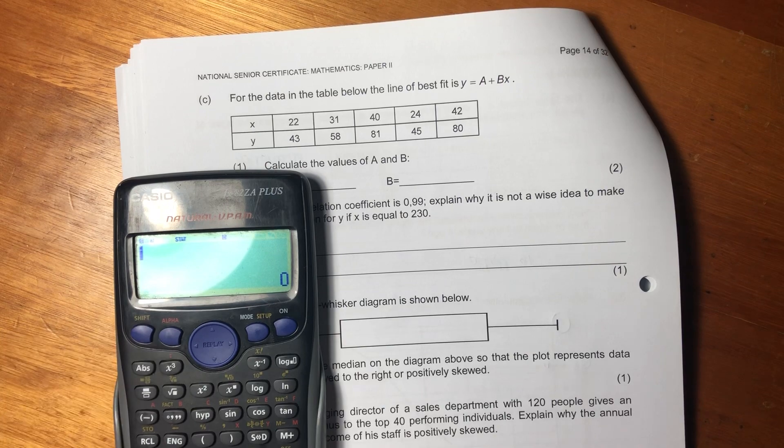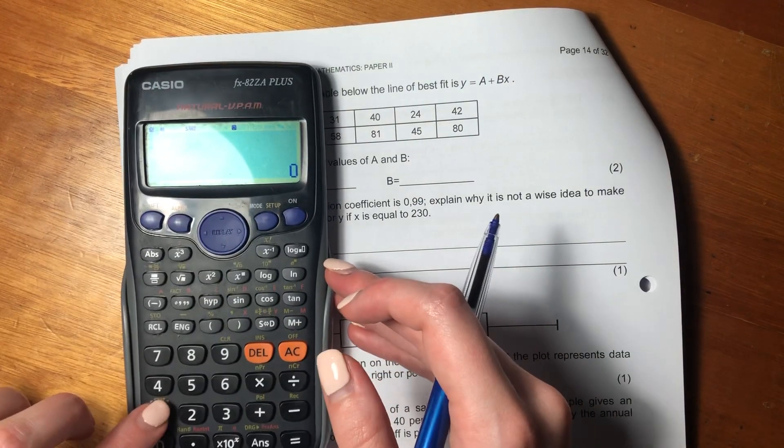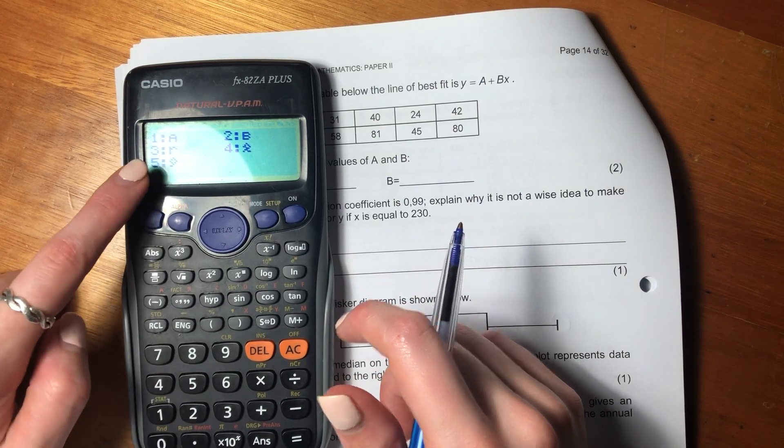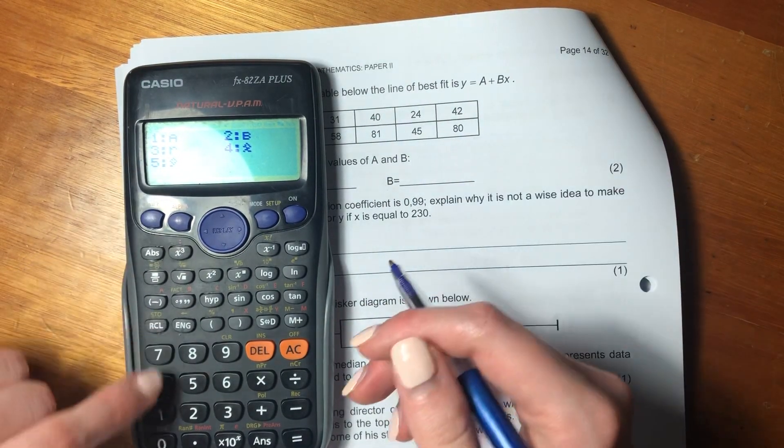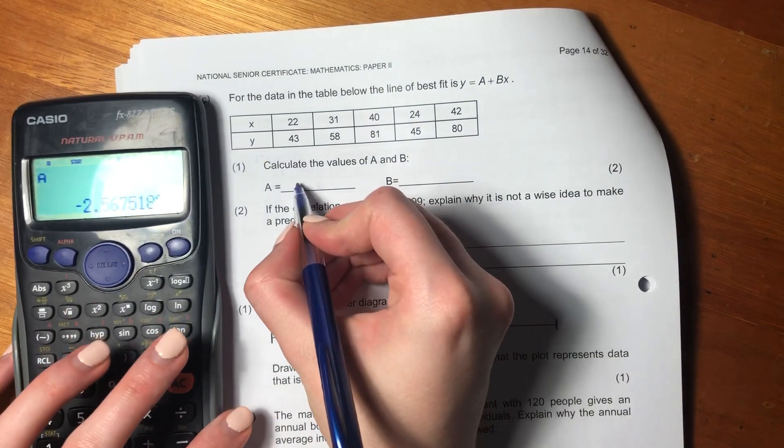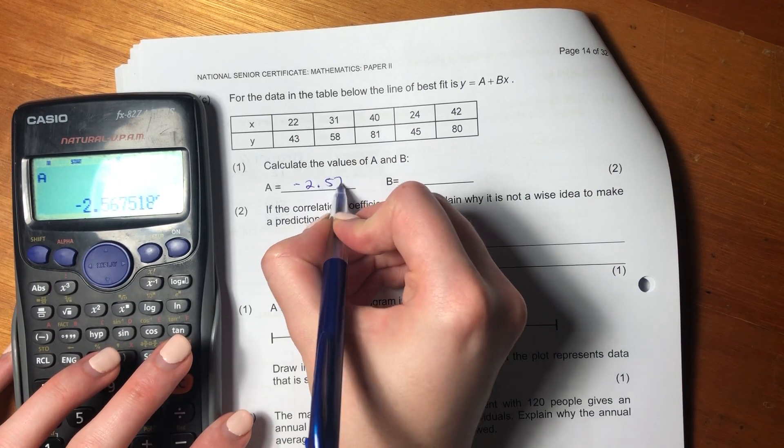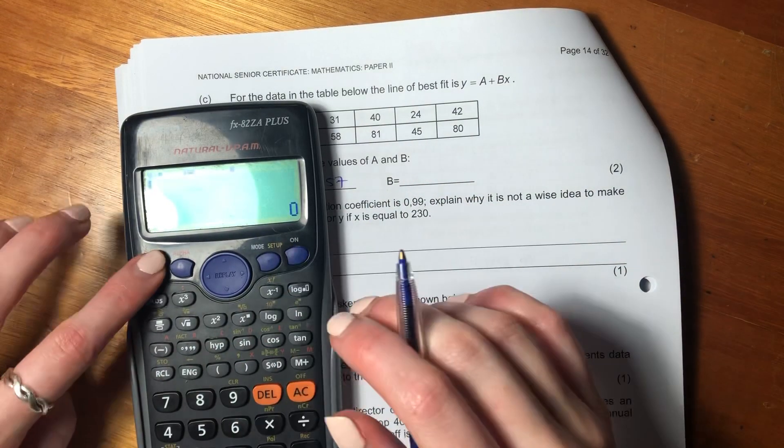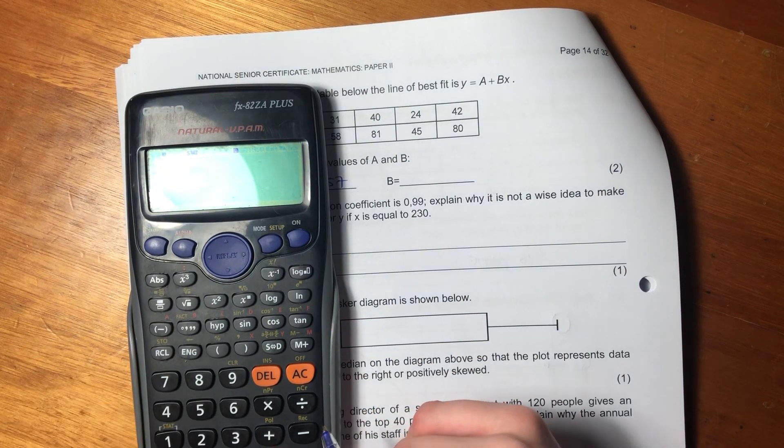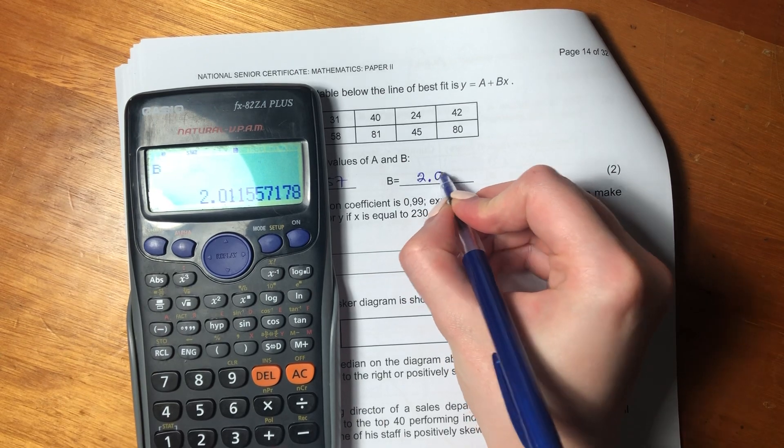Okay, you go shift stat. Then we want to go to our regression line, because this is a form of regression. And then we want to find out what A is. So A, I'm getting as negative 2.57. Shift stat again, regression line. Go to B. B is going to be 2.01.